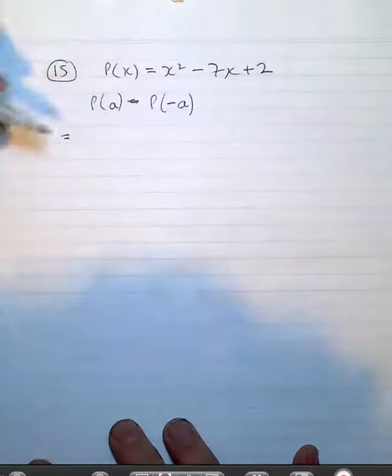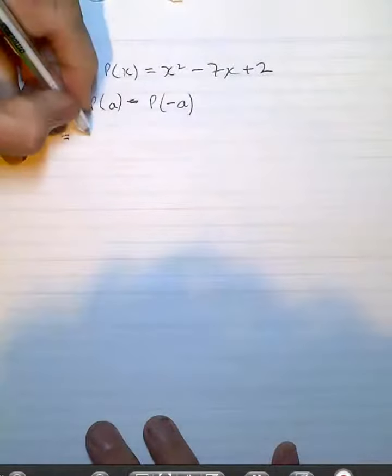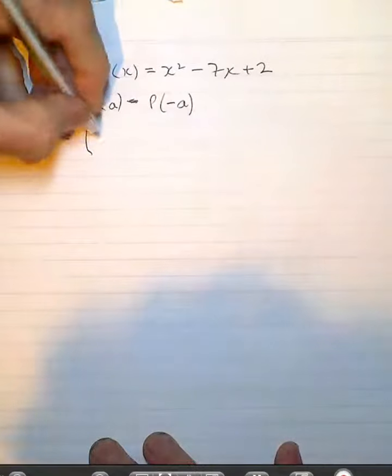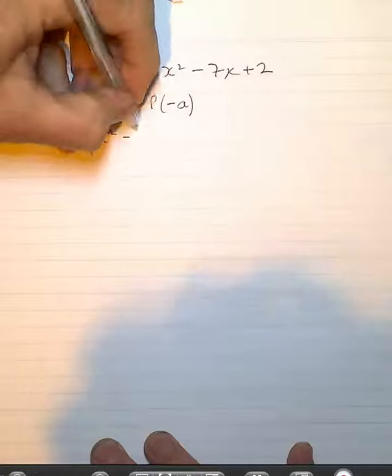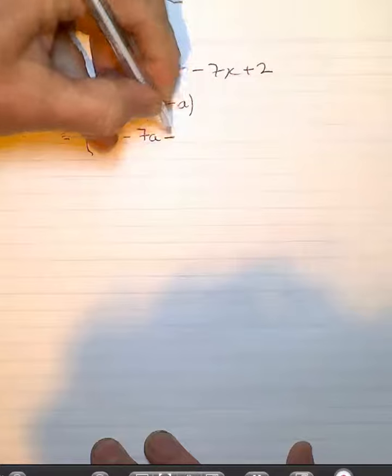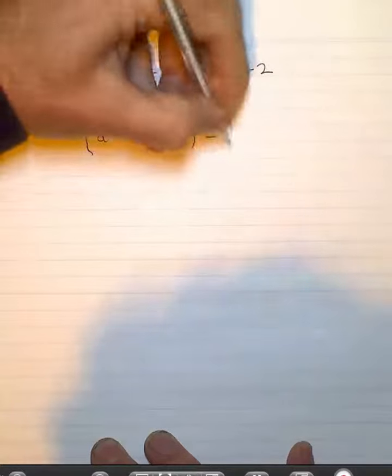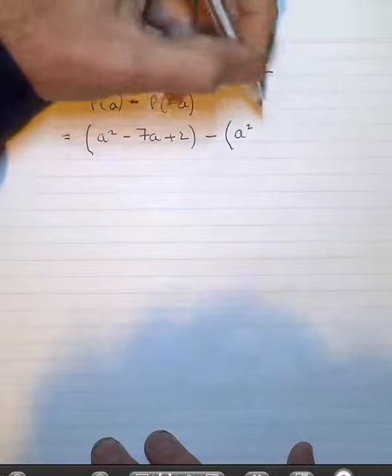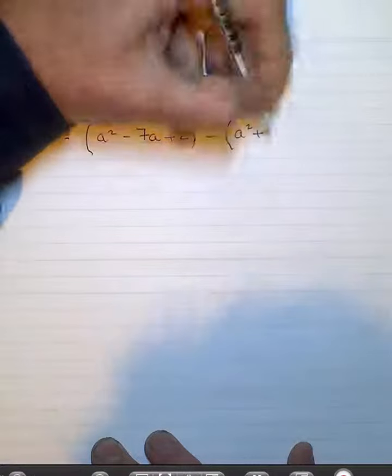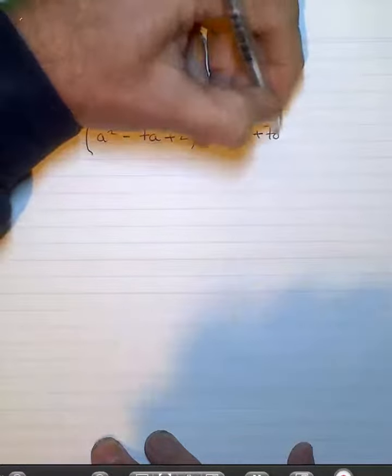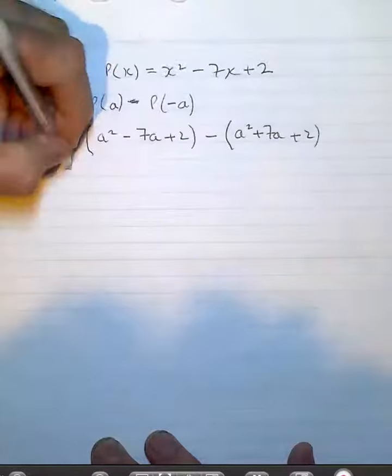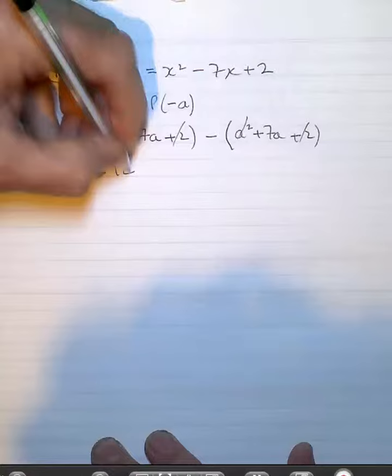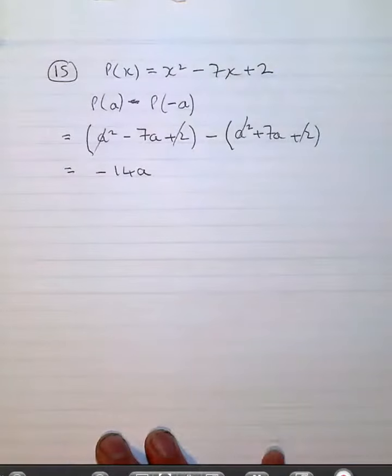In number 15, you're asked to substitute in a and negative a and evaluate it. So I'll just do this grouping-wise so it becomes a² - 7a + 2. Now that's still a², that will be plus 7a, ending up giving me -14a as my answer in that instance.